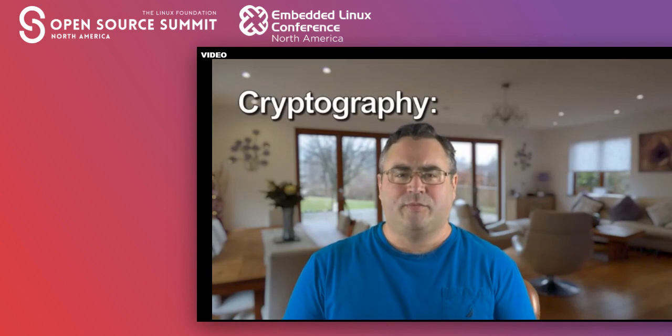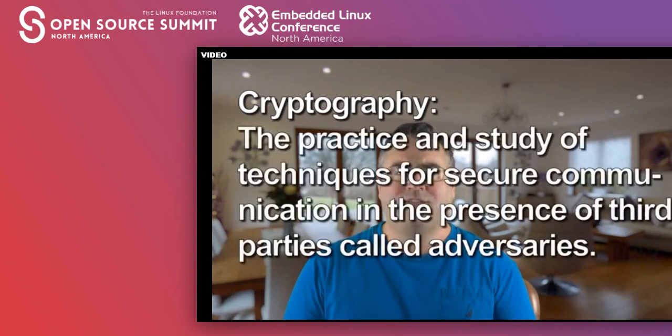At the core of much of what is done for security is cryptography. Wikipedia defines cryptography as the practice and study of techniques for secure communication in the presence of third parties called adversaries. Before we move on, let's make sure we understand the word communication. It is sometimes easy to think of communication as a live thing, maybe talking on the phone or texting someone. But communication can also be something that is stored. You are watching this video sometime after I made it, and while you are watching it, I will be doing something else.